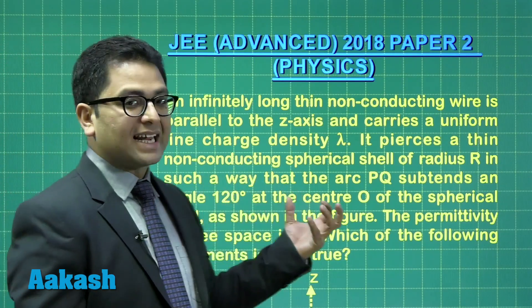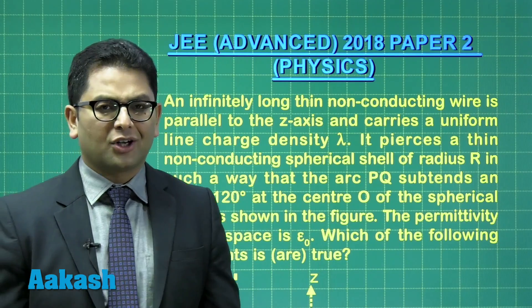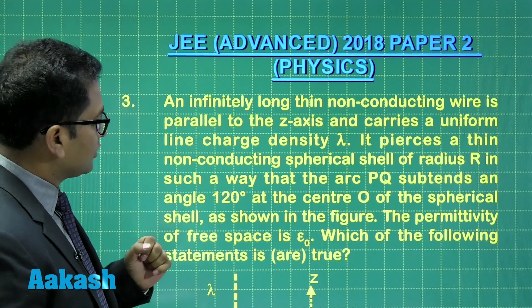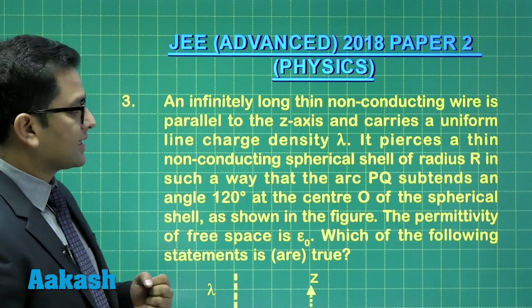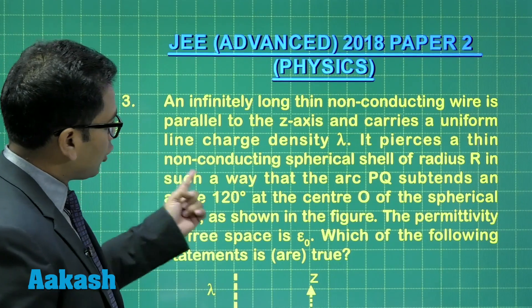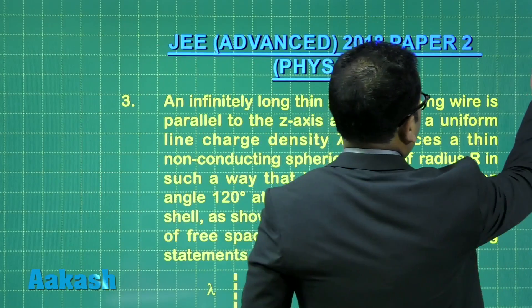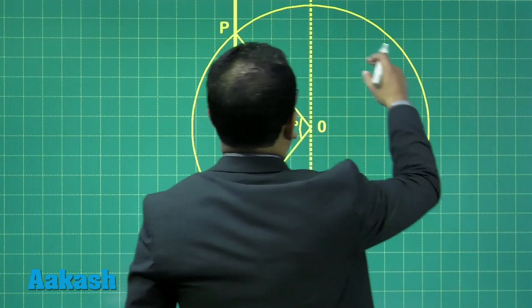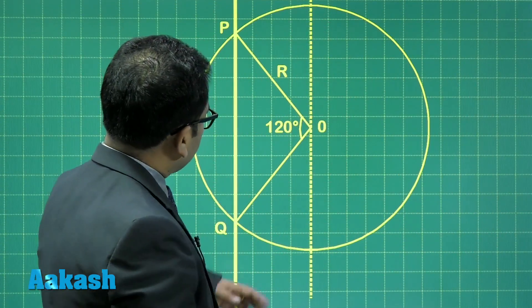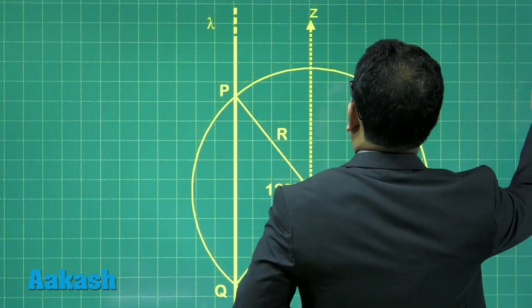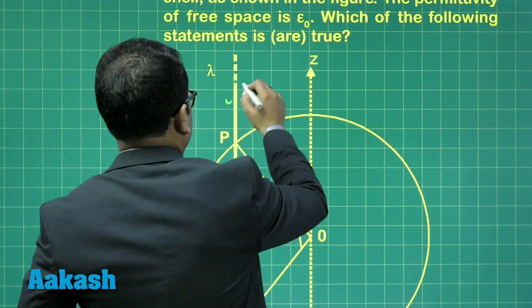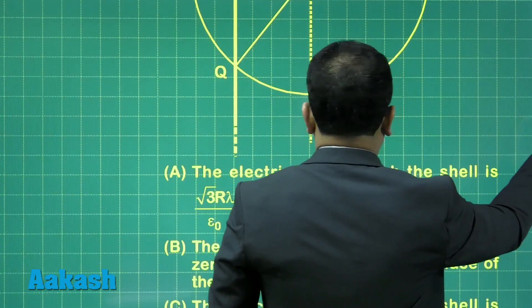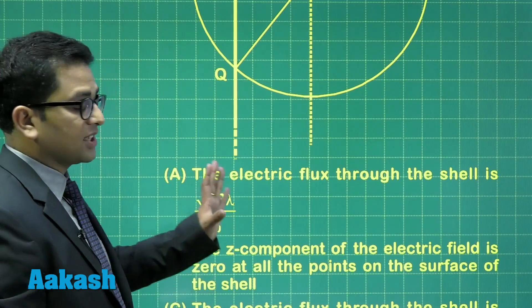Question number three from electrostatics — a sweet application of Gauss law. An infinitely long thin conducting wire is parallel to the z-axis and carries a uniform line charge density lambda. It pierces a thin non-conducting spherical shell. So the wire is infinitely long with charge density lambda along the z-axis.